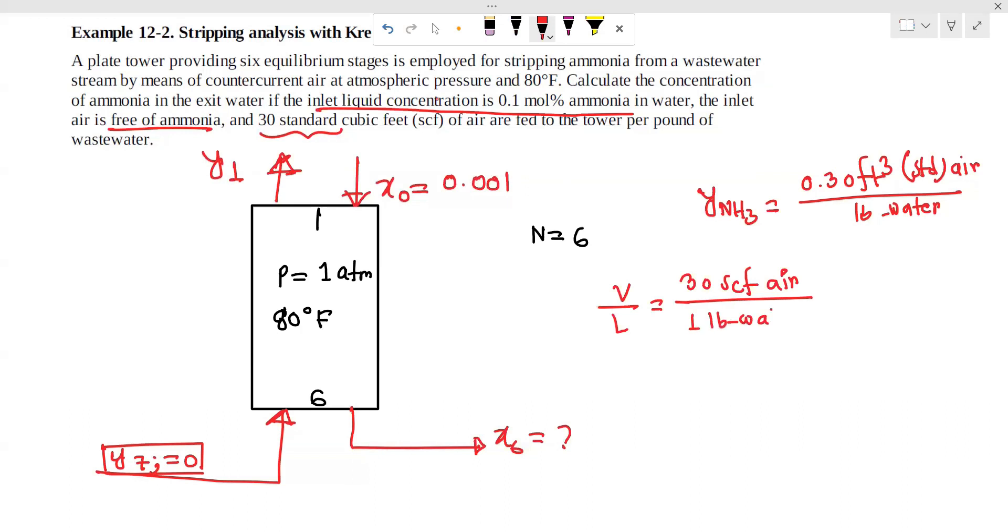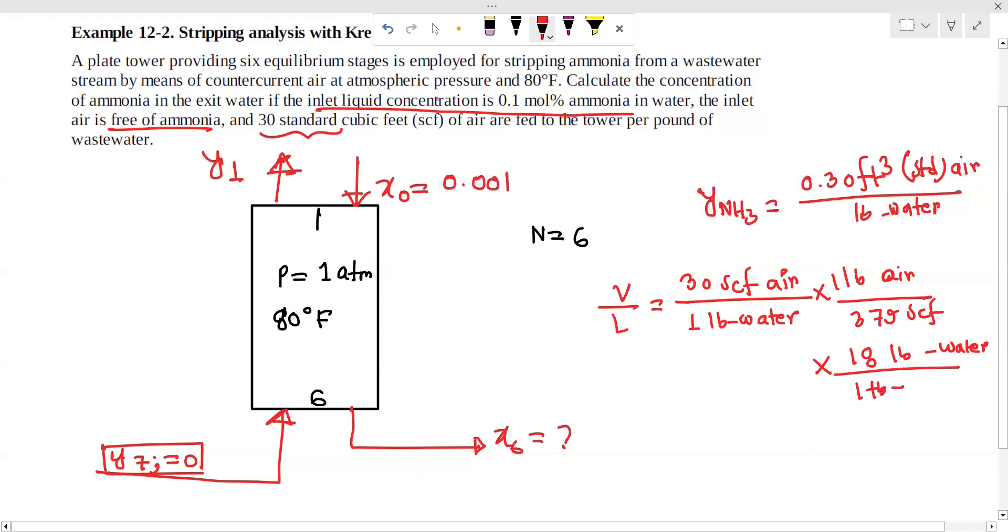1 pound air divided by 3.77 gives 1.2 moles air per pound water. That's 1 pound divided by 18, giving moles water. So 1.43 moles air per mole water is the ratio.